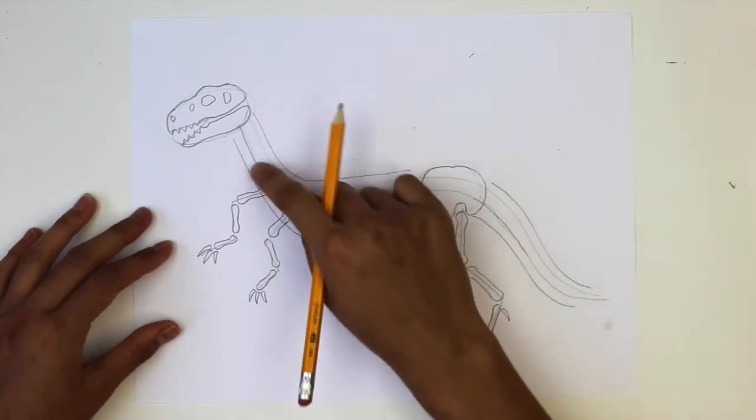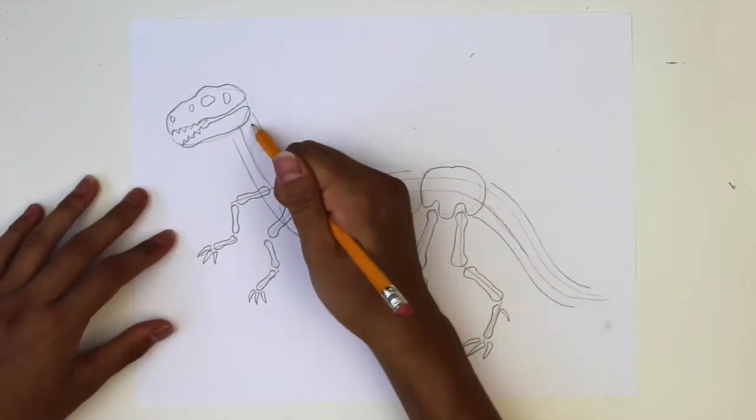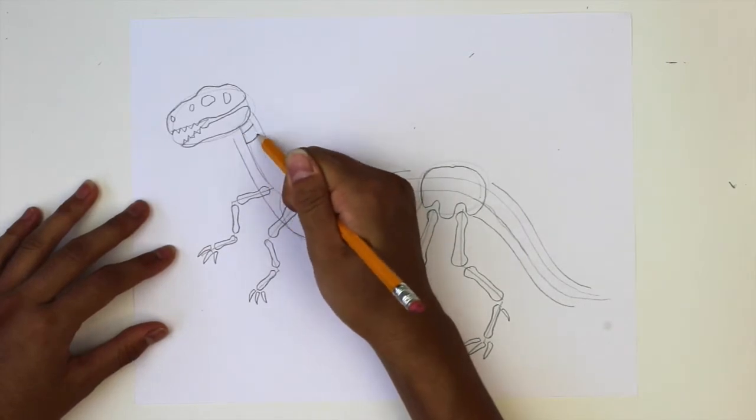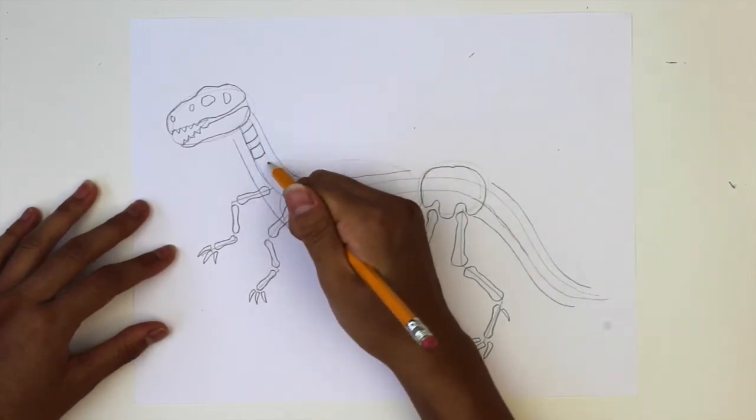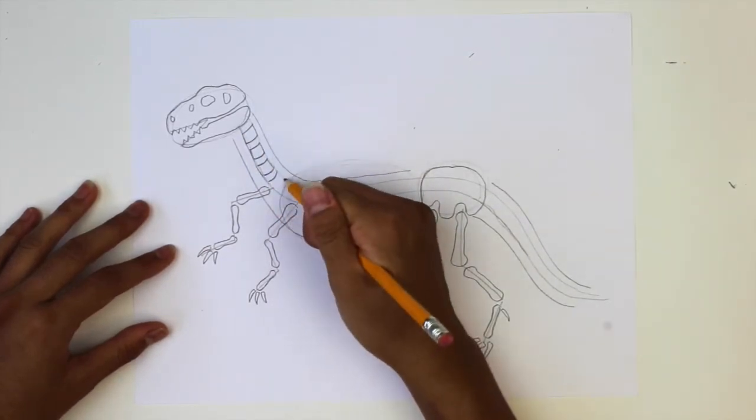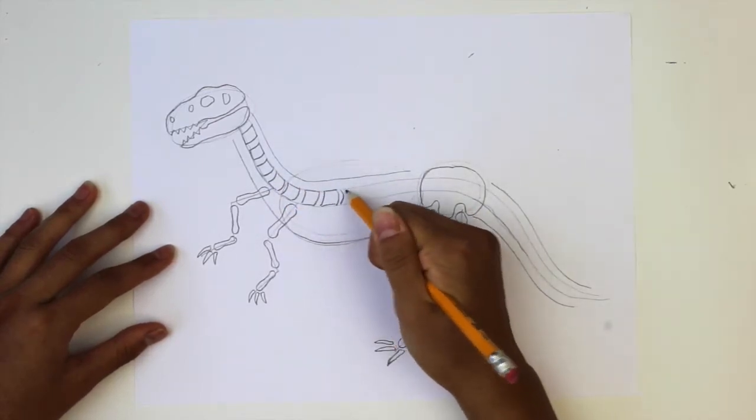We will split up the spine into different segments, so using the guidelines draw curved lines across the two lines and make them into curved boxes. Go all the way to the tip.